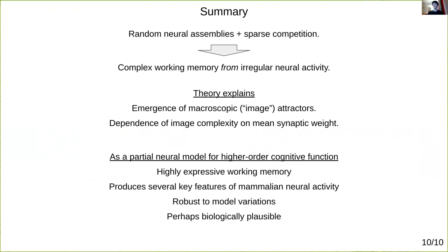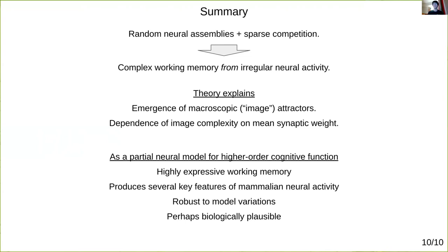And so overall, I have attempted to shed some light on at least a partial neural model for higher order cognitive function. The model generally generates a highly expressive working memory system simultaneous with several key features of mammalian neural activity, such as sparse irregular firing and slow firing rate fluctuations.